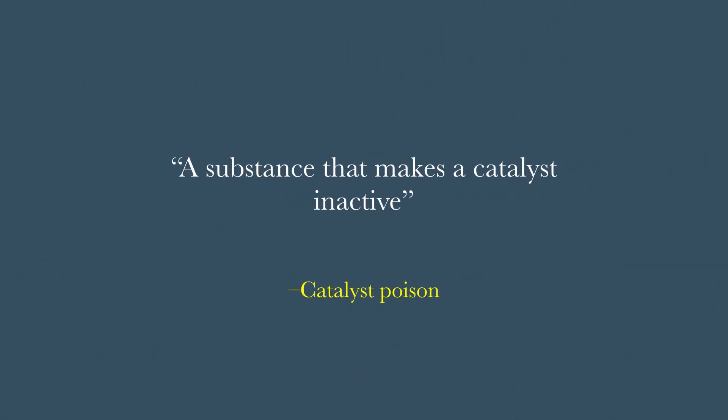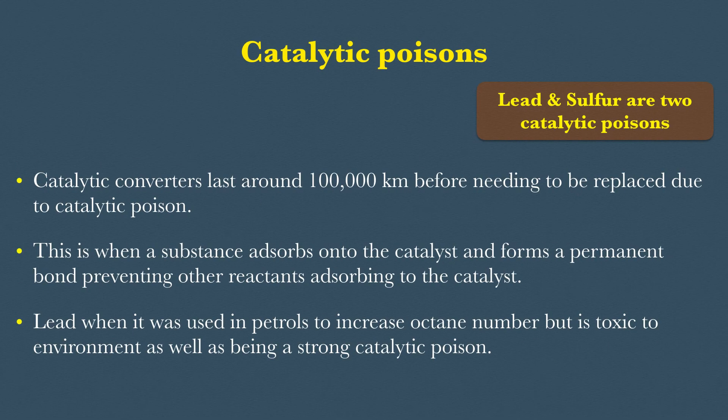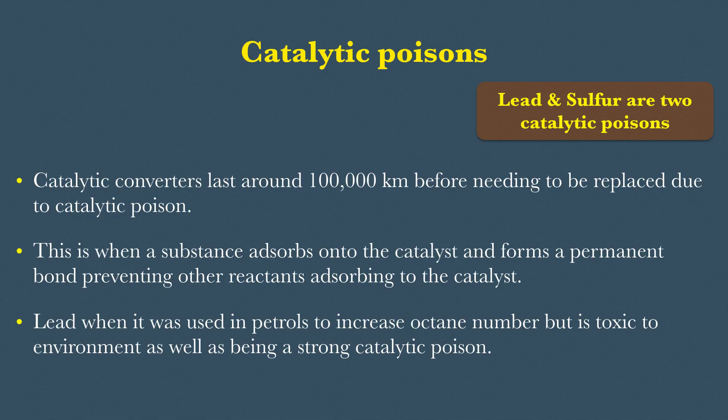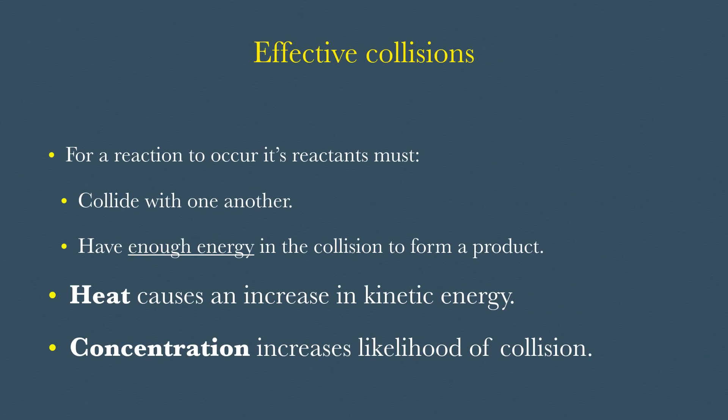Catalytic poisons are substances that make the catalyst inactive. Lead and sulphur are common catalytic poisons. Catalytic poisons are a problem and they relate back to the surface adsorption theory. During the adsorption stage, temporary weak bonds are formed between the reactant and the catalyst. However, for catalytic poisons, they form permanent bonds onto the surface of the catalyst. This means the reactants can't get access to the surface of the converter anymore.